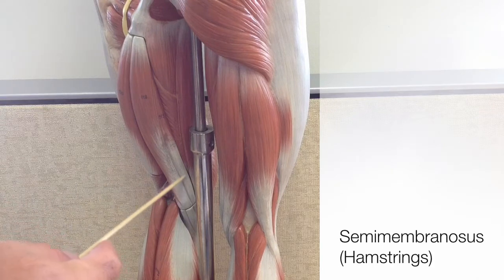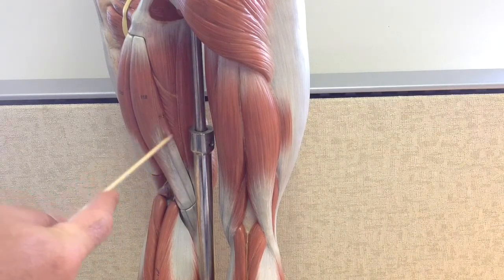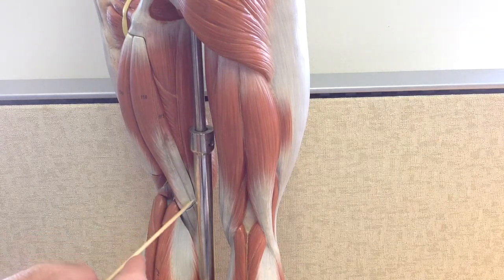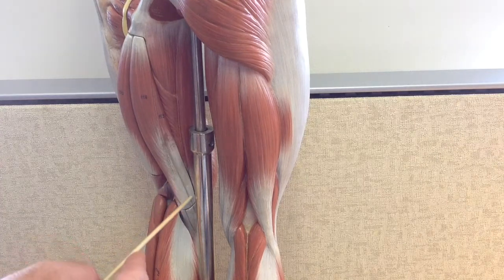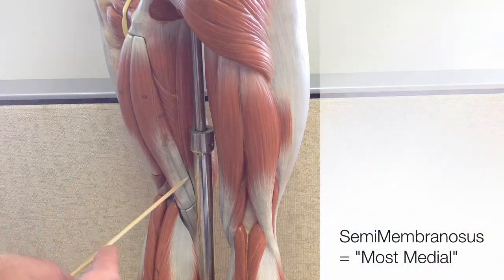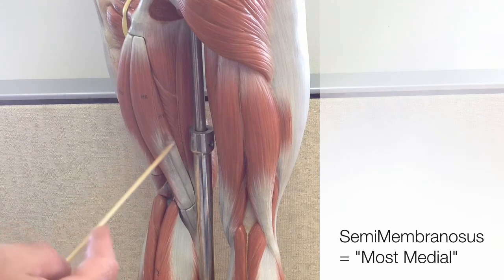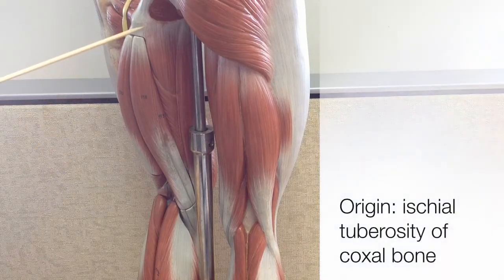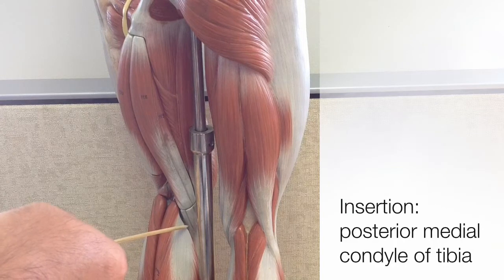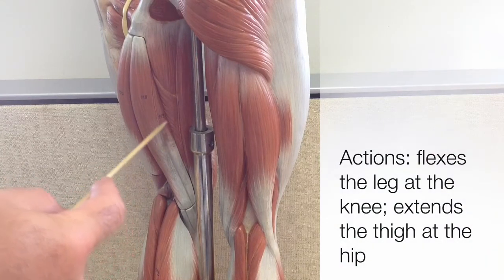The third and last of our hamstring muscles is the semi-membranosus. It's located just deep to the semi-tendinosus. We can see the membrane-like tendon of the membranosus just underneath the long tendon of the tendinosus — that's where the name comes from, after its long, flat, membrane-like tendon. You can also remember the semi-membranosus because it's the most medial of the three hamstring muscles — membranosus starts with an M, and it is the most medial. Its origin is the ischial tuberosity of the coxal bone, and it inserts onto the posterior medial condyle of the tibia. Its actions are identical to the other hamstring muscles: flexion of the leg at the knee and extension of the thigh at the hip.